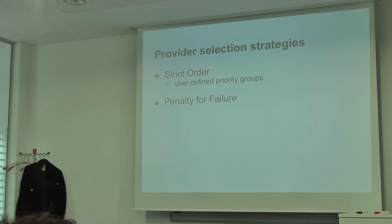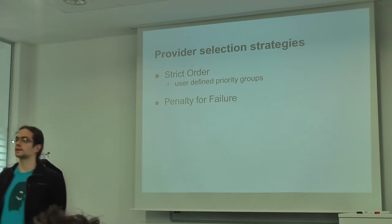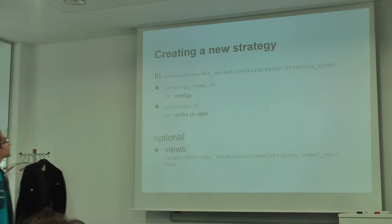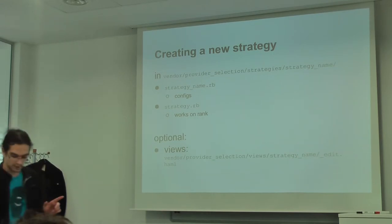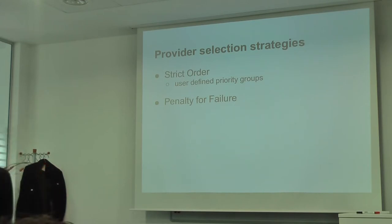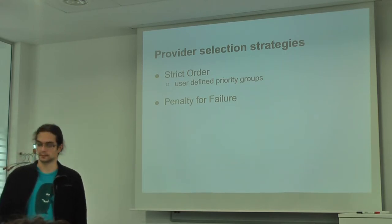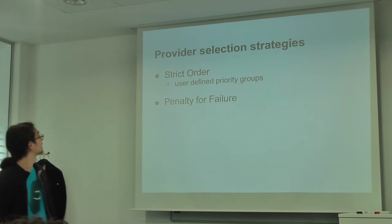So the penalty for failure, it has a few options. The percentage which you want to penalize the provider account for each failure, the time interval you want to consider the failures, and you have the third option, which is an optional one. So you can define a number after, when the failure number exceeds its number, the provider account is excluded if there is any other available provider account. And one more note - for one and one, only the penalty for failure is shipped. And the strict order is not the reason for that - we are thinking about some refactoring of the priority groups.